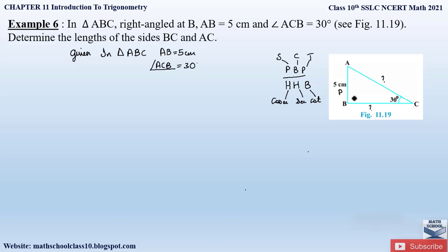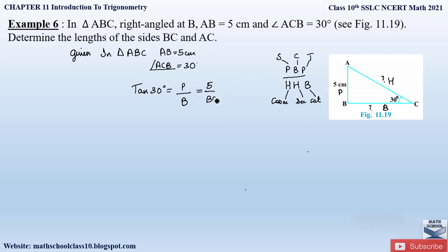In this figure, angle C is the acute angle. The side opposite to it is the perpendicular, AB is the base, and AC is the hypotenuse. Since we are finding BC, we consider BC and the known side AB — that is perpendicular by base. The trigonometric function for perpendicular by base is tan. So we apply tan C: tan 30 = perpendicular / base = 5 / BC.